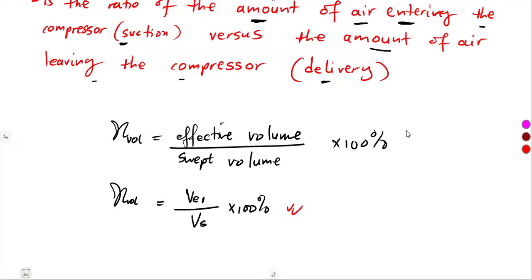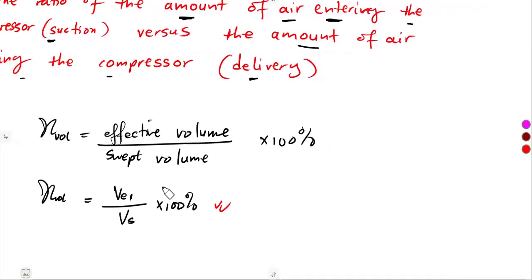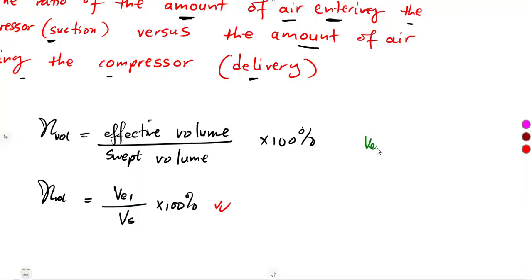Remembering the other formulas that we had before as we had our PV diagram — do not forget that part. A check note on these conversions: where basic units are used, there is no need to mix cubic meters and cubic meters per second. If you have it here, also have it here. If you just use cubic meters as it is, this must also be cubic meters. We do understand that our effective volume at inlet is the difference between V1 and V4.